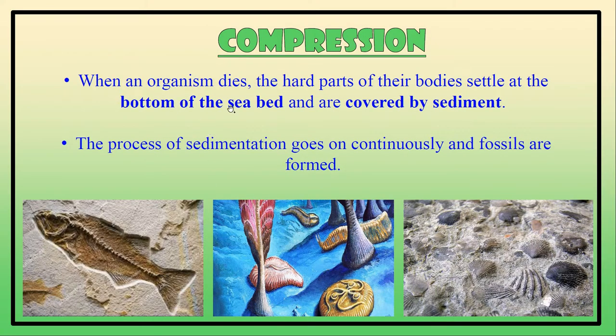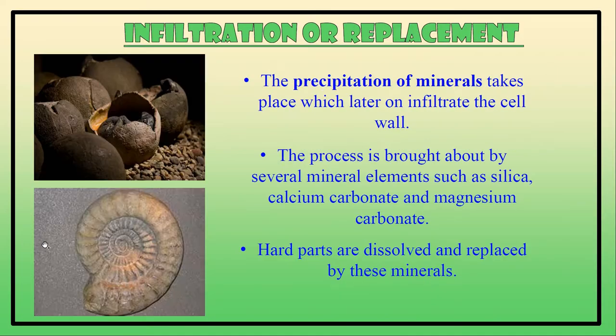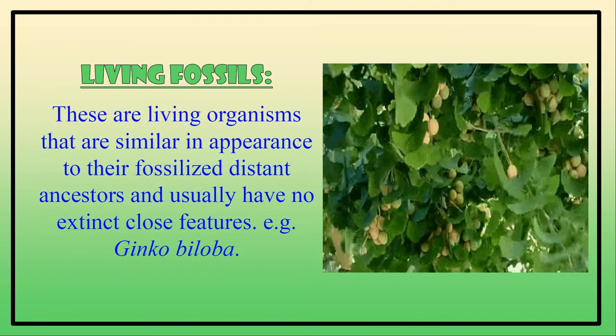Compression: when an organism dies, the hard parts of the body settle at the bottom of the sea and are covered by sediment. This process of sedimentation continues and fossils are formed. Infiltration or replacement: the precipitation of minerals infiltrates or replaces the cell content, entering through the cell wall. Minerals like silica, calcium carbonate, and magnesium can infiltrate into the cell wall, and hard parts are also dissolved and replaced by these minerals.